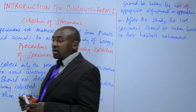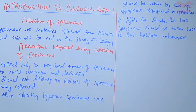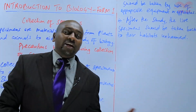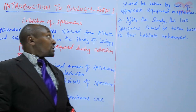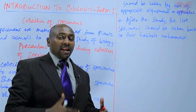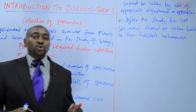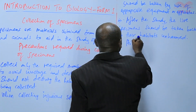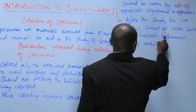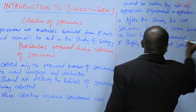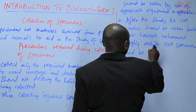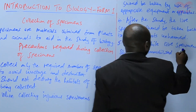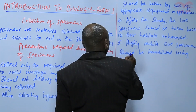We also have some specimens that are highly mobile — that move very fast, like the centipedes. For those highly mobile specimens, they should be immobilized and slowed down using particular agents so that they can be caught easily. Highly mobile live specimens should be immobilized using suitable reagents.